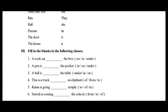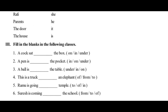Exercise number three: Fill in the blanks in the following sentences. There are six sentences, each with a blank. You need to fill the blanks with suitable prepositions given in the brackets at the end of each sentence. First one: 'The cock sat dash the box.' The options are on, in, under. The cock sat on the box. On is the right preposition.